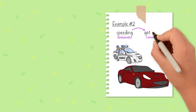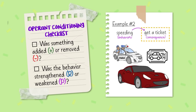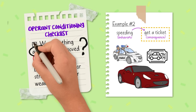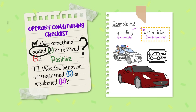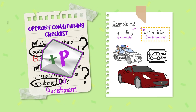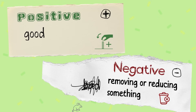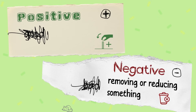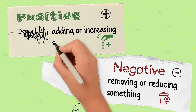Example number two. You're speeding and you get a $100 ticket. In the consequence, was something added or removed? The ticket was added, so it's positive. Is the behavior — speeding — strengthened or weakened? Weakened, so it's punishment. This is an example of positive punishment. And again, it isn't positive because it's good. In operant conditioning, positive simply means that something was added or increased.